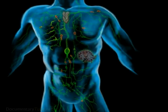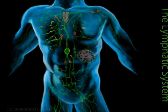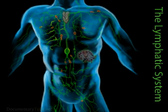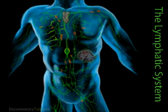The Lymphatic System. Lymph vessels are found in all tissues except the central nervous system, the bone marrow, and tissues without blood vessels, such as cartilage. The lymph system vessels are as extensive as the vessels of the circulatory system.